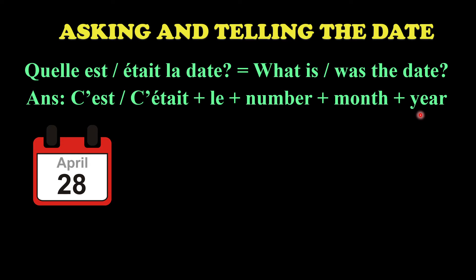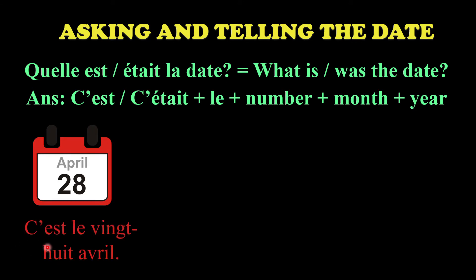Let's practice with just the number and the month. If you're looking at the date 28th of April and want to say 'today is the 28th of April', you say 'c'est le 28 avril.' You use 'c'est' for today, then 'le' - which is always 'le' only - then the number 28, and the month 'avril.' Notice that the first letter of the month is in small letters.